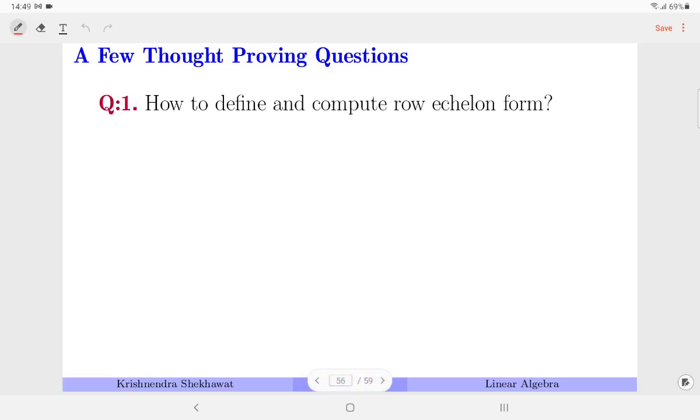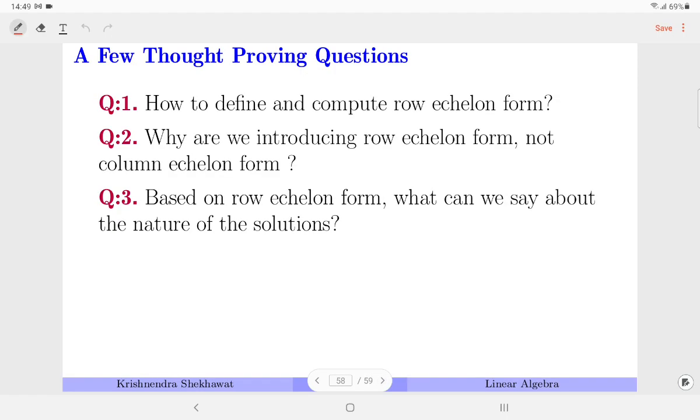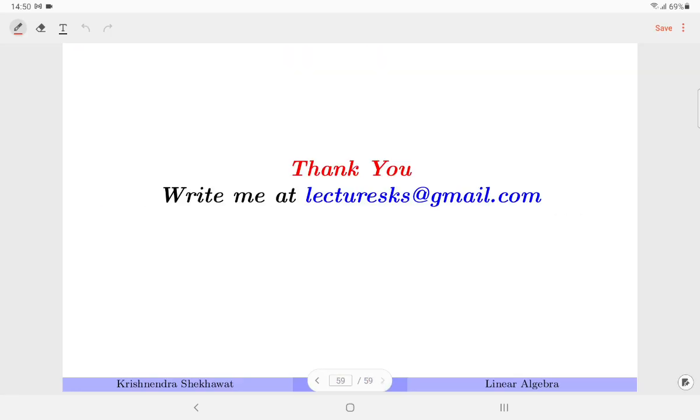From here, a few interesting questions: how can we define the row echelon form? We have seen some examples, based on that you can try to generalize the concept. And based on the row echelon form, can we say something about the consistency of the solution? Give a thought to these questions so that you will be able to connect for the next lecture. Thank you very much for watching the lecture.